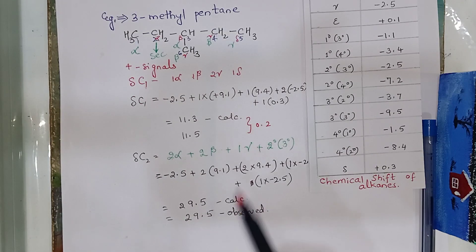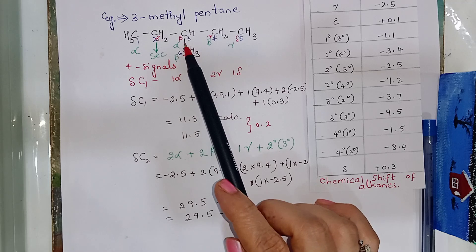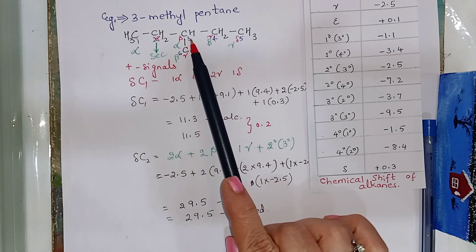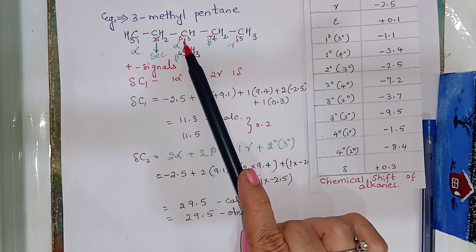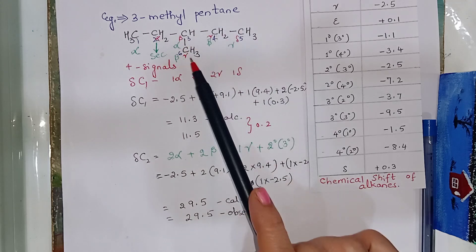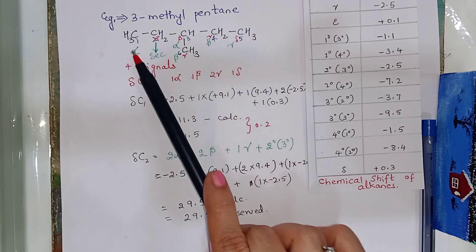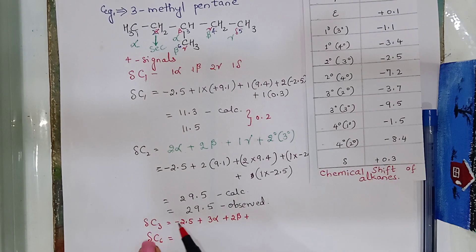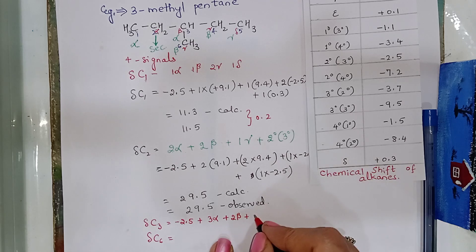In the same way, we do chemical shift value. We find the chemical shift calculated value for carbon 3 and carbon 6. This 2 will be same like this. So, carbon 3 and carbon 6. Chemical shift for C3 will be base value plus 3 alpha carbons plus 2 beta carbons plus 2 gamma carbons.